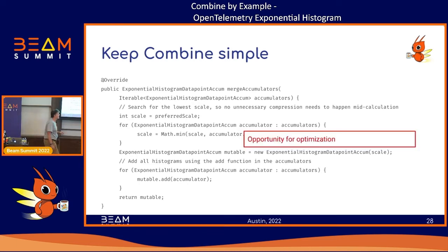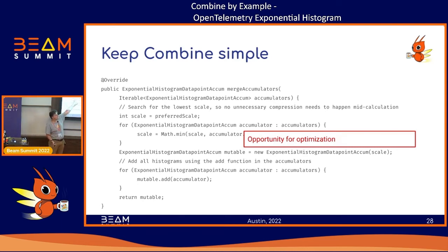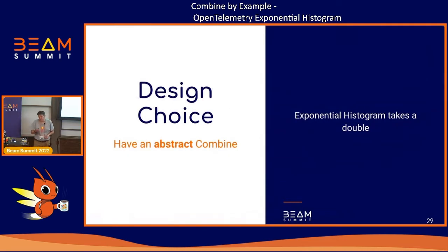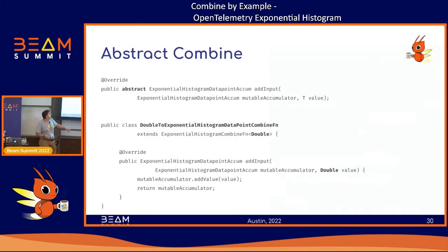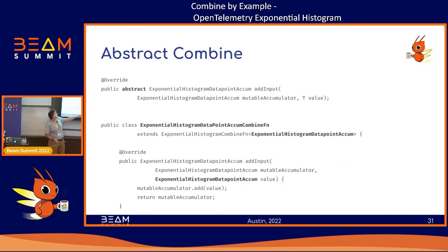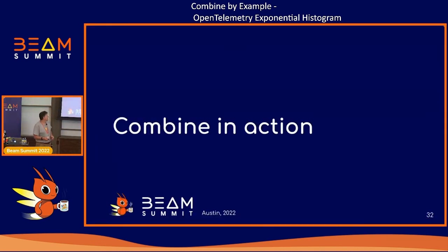There was also an opportunity for optimization: the first accumulator can be mutable. I don't know if the runners take advantage of it, but probably they do. In this use case where we change scale it's not possible, but if the scale stays the same, we could just reuse the first one and add everything onto it. Also, the accumulator is abstract — it takes a double, but it could take another metric or longs. So we have a double-to-exponential-histogram or an exponential-histogram-to-data-points variant.